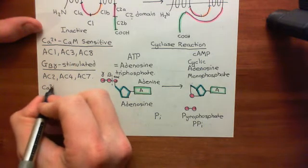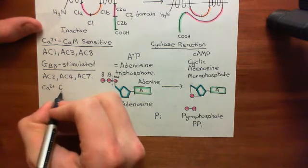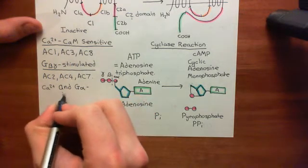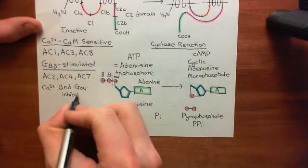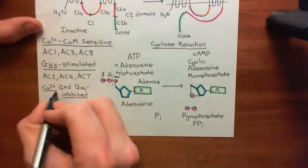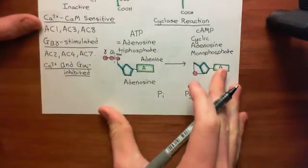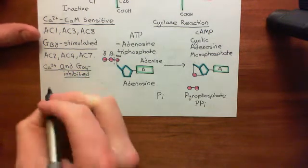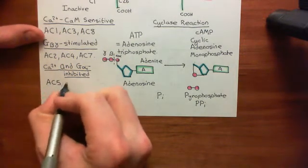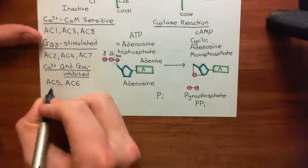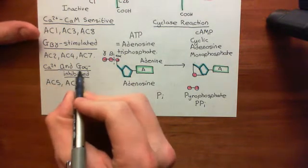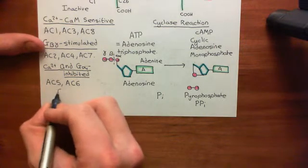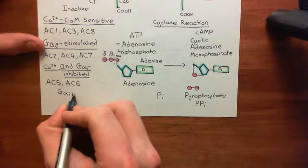Next, we have the calcium and G-alpha-I inhibited family. This family contains two adenylyl cyclase enzymes — adenylyl cyclase 5 and adenylyl cyclase 6 — both of which are inhibited not only by intracellular calcium, but also by G-alpha-I subunits of heterotrimeric G proteins. All three of the G-alpha-Is will inhibit these, so G-alpha-I1 to G-alpha-I3.